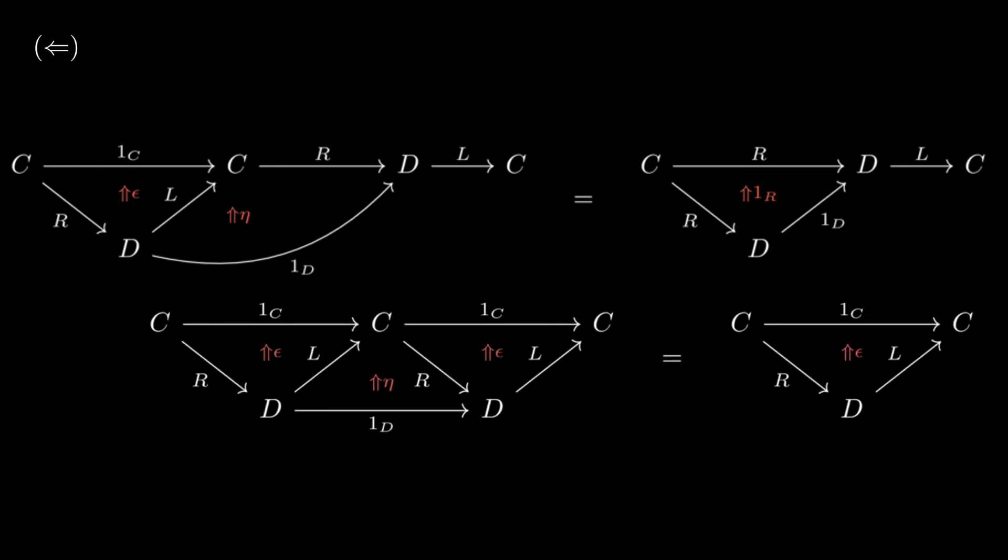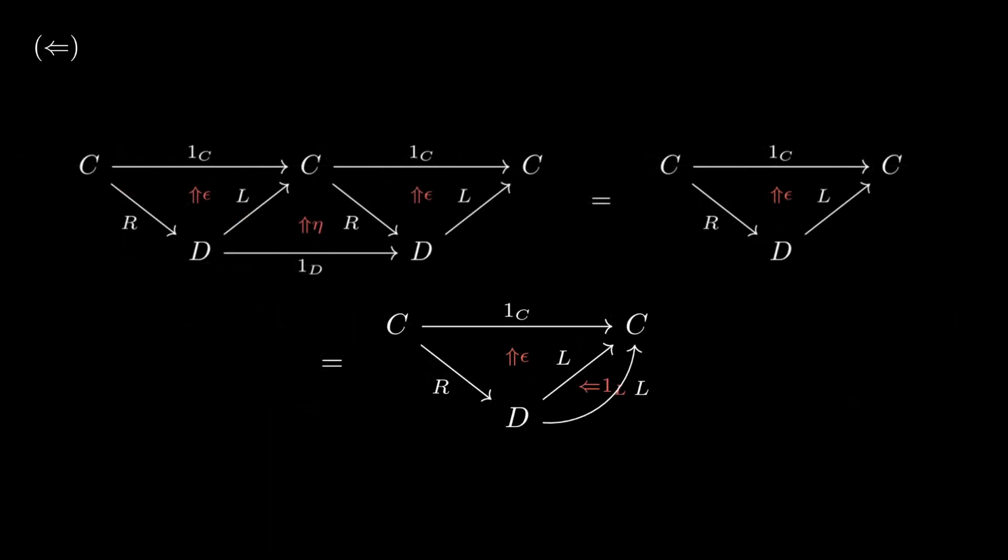Even though this is obvious, I want to point out that we can, in fact, have a right Kan extension of L through itself via the identity on L. I do this so that we can write our overall equality a bit more suggestively.